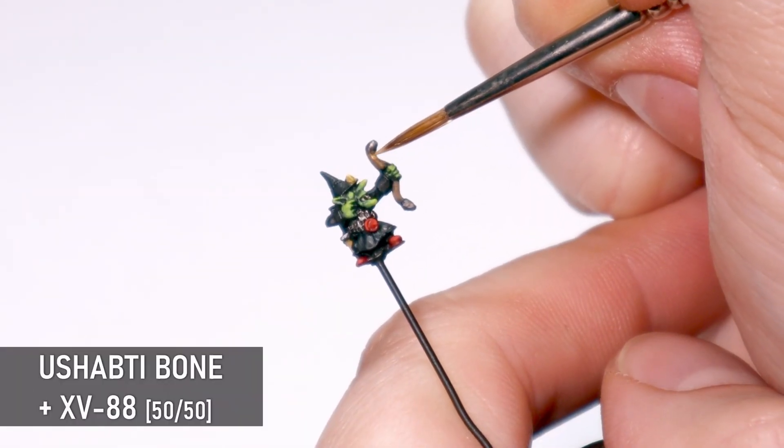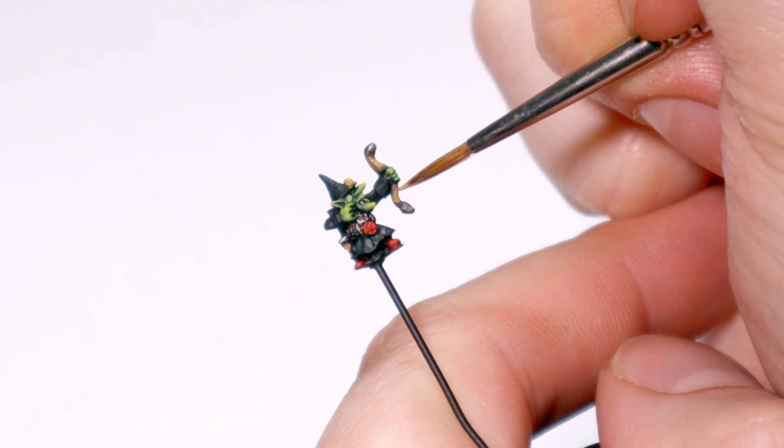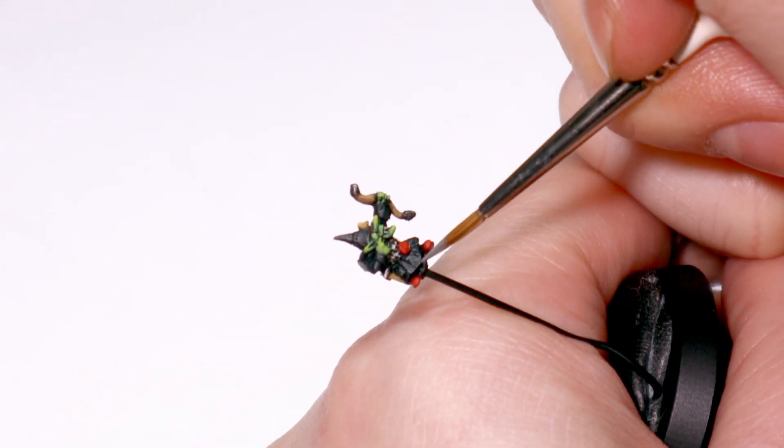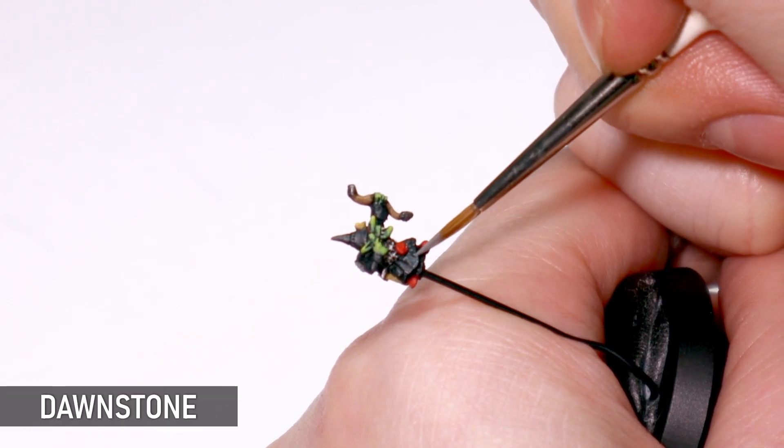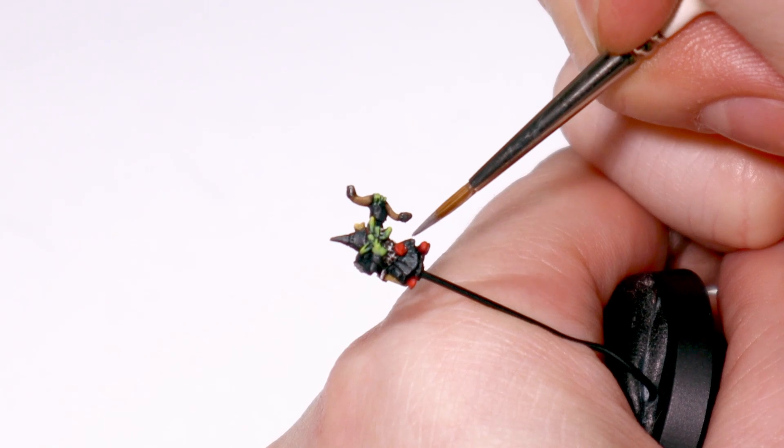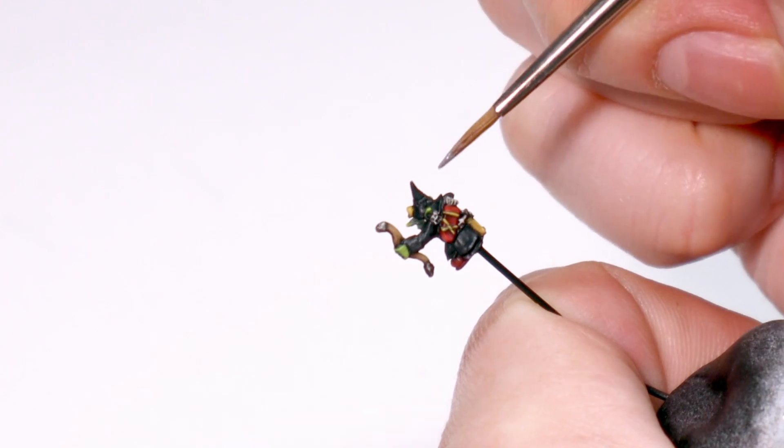Some more highlight definition on the bow with a mix of XV88 and Ushabti Bone. I'm going to roll the dice and add some Dawnstone edge highlights to his robe. You can easily go too far with highlights on black and end up making the whole thing look too grey, so I've got to be careful here.